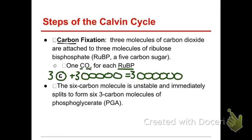Here's the thing about this six-carbon molecule: it's so unstable, we don't even give it a name. It doesn't last very long. It immediately splits in half, and then we have these three-carbon molecules — three-carbon sugars called PGA. How many do we have of them? Six. See how we have the same number of carbons still? We just chopped all those six-carbon molecules in half, and now we have six of these three-carbon molecules called PGA.